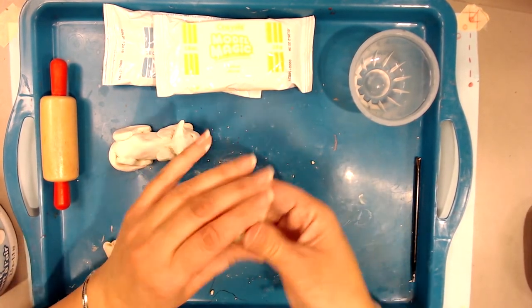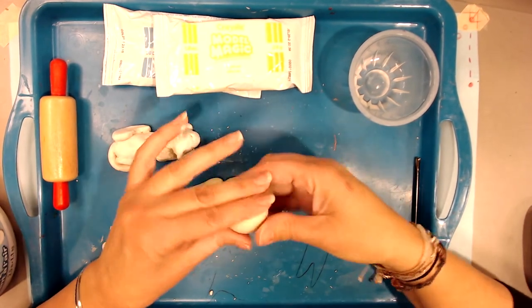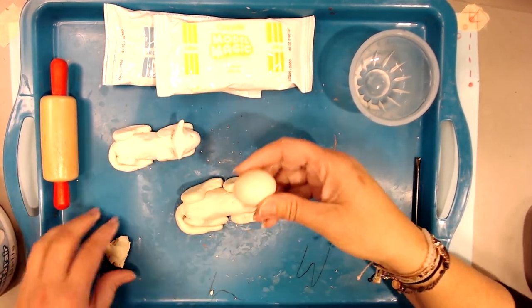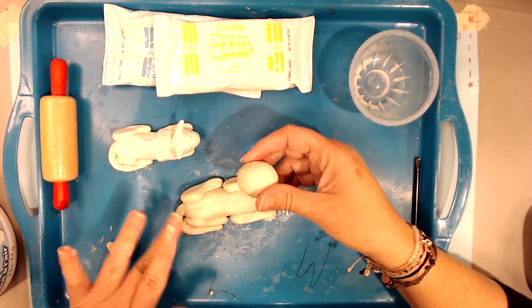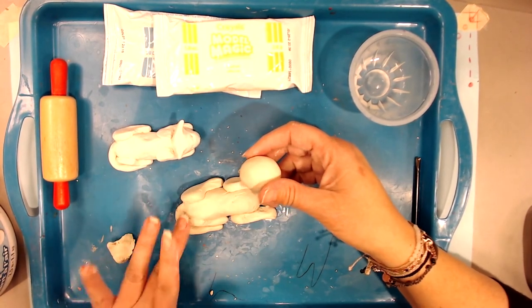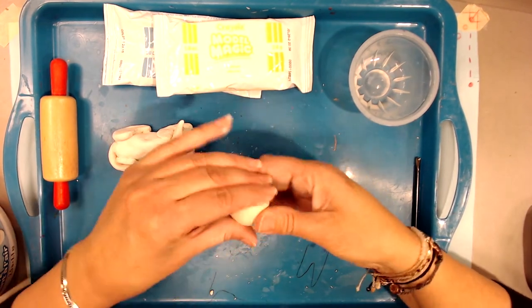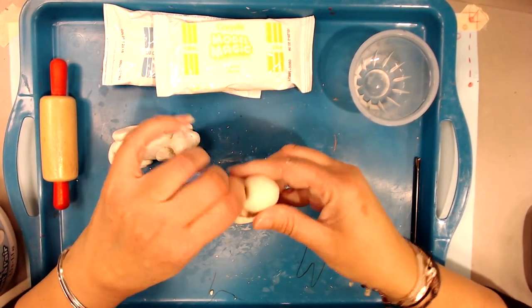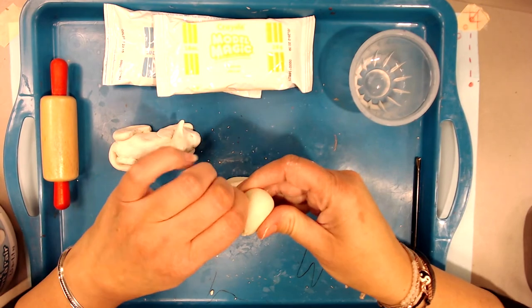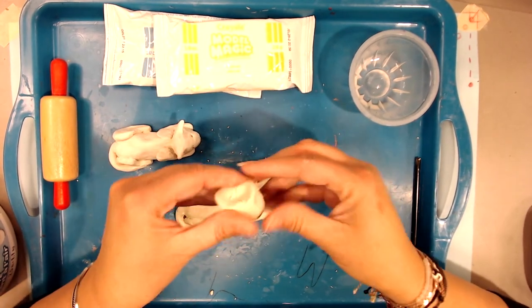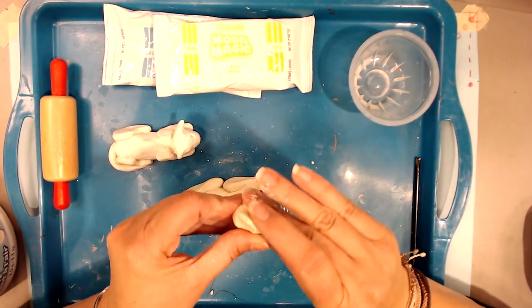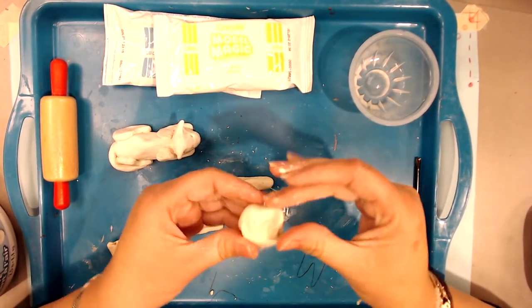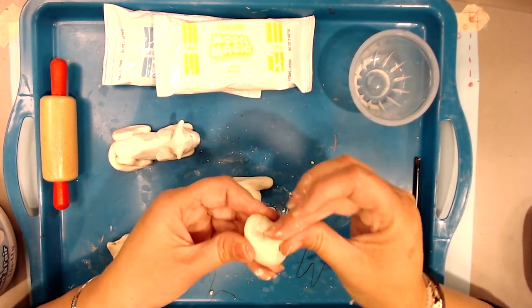There's two ways you could do the ears. If you were doing a floppy-eared dog, you could use an extra piece of clay to add some ears the same way that we did with all these legs and tail. For the cat, I'm just going to pinch two kind of triangle shapes from the head.